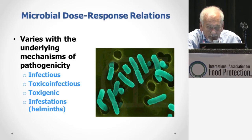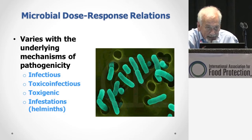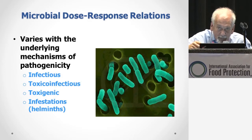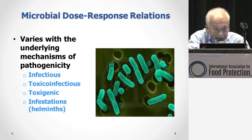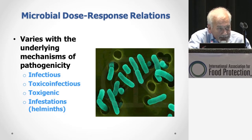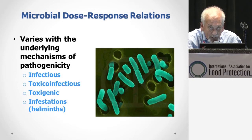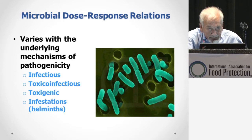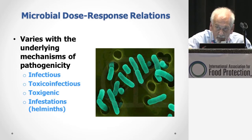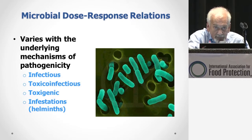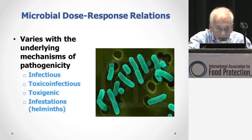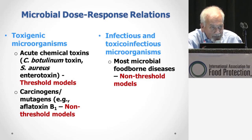For toxico-infectious organisms, these are organisms that infect the intestinal tract, produce toxins that then migrate across the intestinal barrier and have an effect somewhere within the body. For toxigenic organisms, we're talking about organisms that grow in a food, produce a chemical or toxin, and then that toxin causes a problem once the food is ingested. It's important to understand these mechanisms because they determine what kinds of models we have to use.